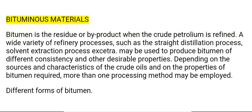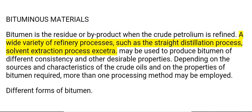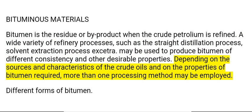Bituminous Materials. Bitumen is the residue or by-product when crude petroleum is refined. A wide variety of refinery processes, such as the straight distillation process and solvent extraction process, may be used to produce bitumen of different consistency and other desirable properties. Depending on the sources and characteristics of the crude oils and the properties of bitumen required, more than one processing method may be employed.